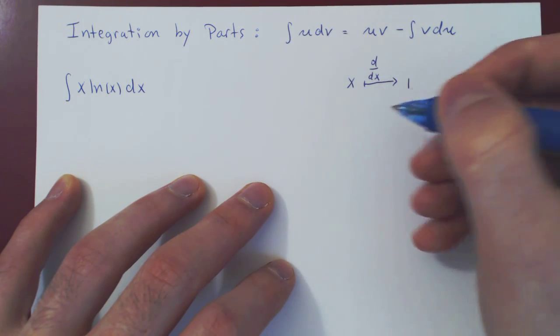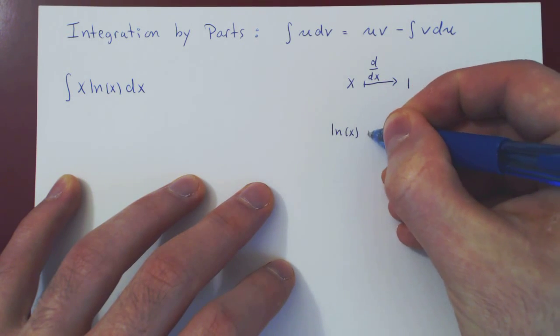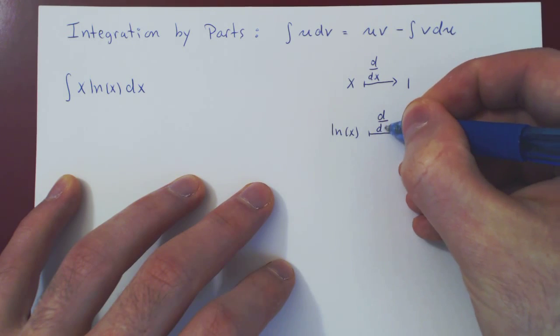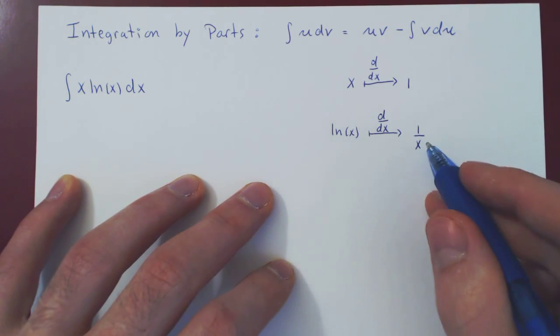What about ln of x? If we take ln of x and we differentiate ln of x, we get the function 1 over x, which is also a simplification.